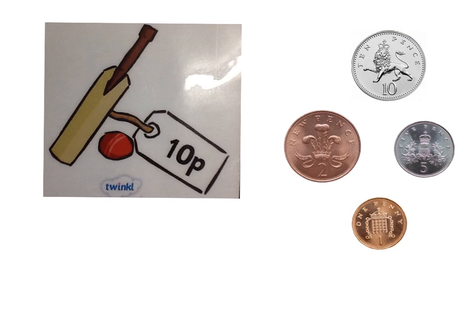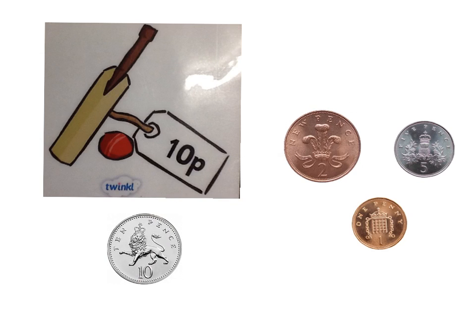If we want to buy an item that costs 10 pence, we check the coins that we have. We have a 10 pence coin, so we can just use this 10 pence to pay for a baton ball that costs 10 pence.